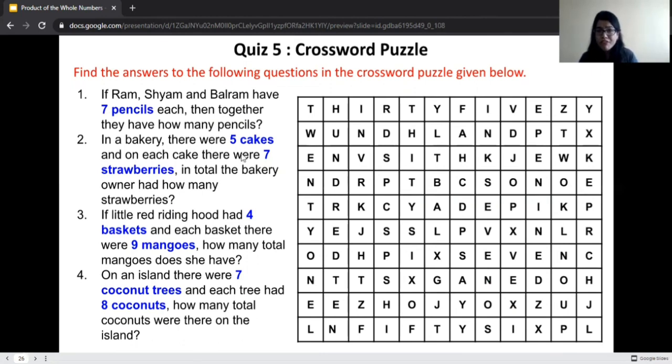Next question. In a bakery, there were five cakes and on each cake there were seven strawberries. In total, the bakery owner had how many strawberries? Five cakes multiplied by seven strawberries. Five sevens are 35. The answer is 35. Can you find 35 in this crossword puzzle? Over here, we have 35. Good job. Next question. If Little Red Riding Hood had four baskets and each basket had nine mangoes, how many total mangoes does she have? Four multiplied by nine, that is 36. Let's find 36 in this puzzle. It is over here. Very good.